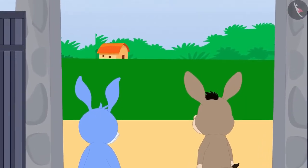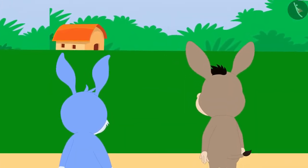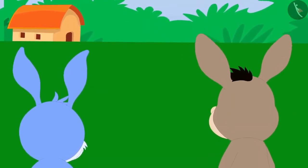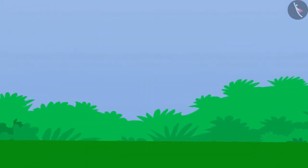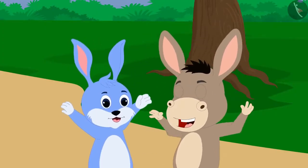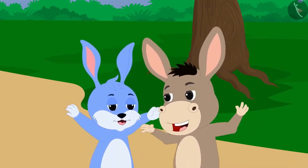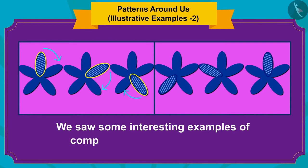Bunny and Bola both rushed out of the jungle excitedly through this exit gate. As soon as they managed to exit the jungle, both of them started dancing happily. In this video, we saw some interesting examples of completing incomplete patterns.